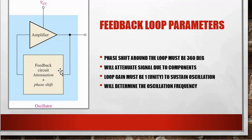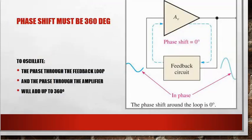This feedback loop circuit will determine the oscillation frequency. So the phase shift must be 360 degrees throughout this loop, and we require that to oscillate. We get phase through the feedback loop and the phase through the amplifier. When we add the two phases together, they will add up to 360 degrees.